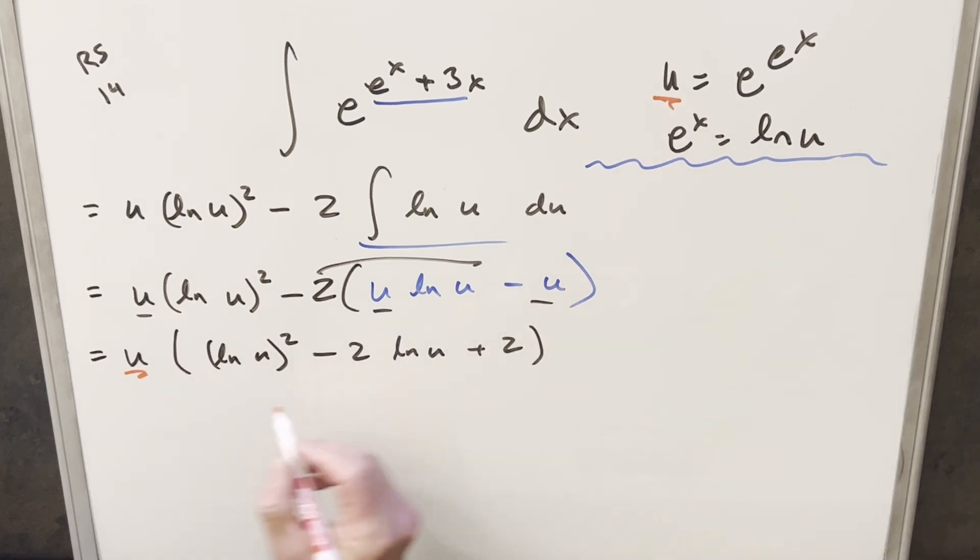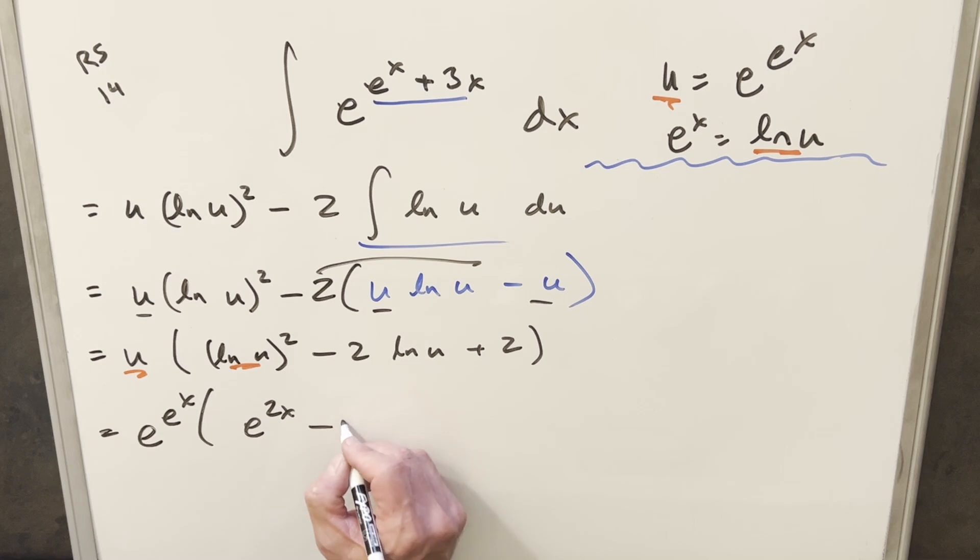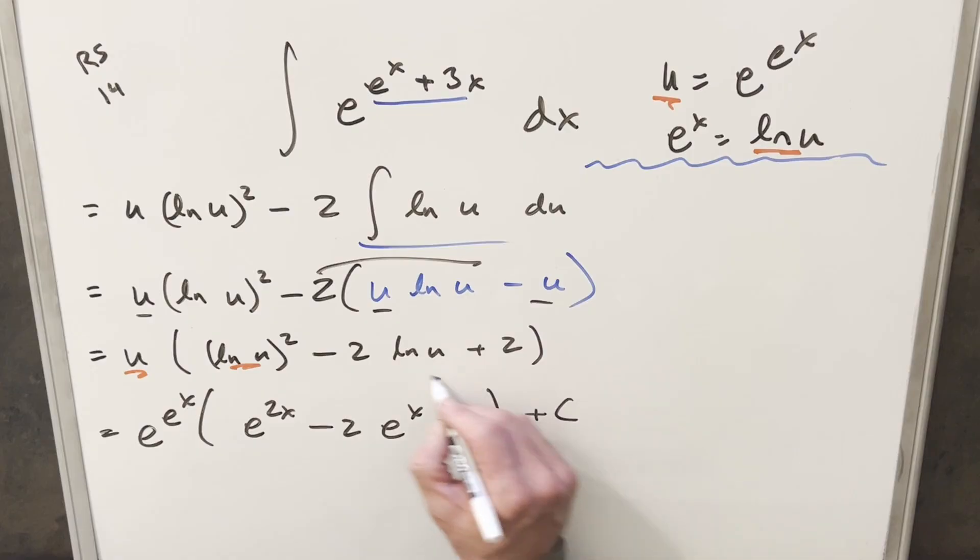And now we just need to back substitute to finish it off. But we have our value for u right here. And we have our value for natural log of u right here. So just plugging in up front, this is going to become e to the e^x. This is going to become e^x all squared. I'll write it as e^(2x) minus 2 e to the x plus 2. Add a plus c. And that's it.